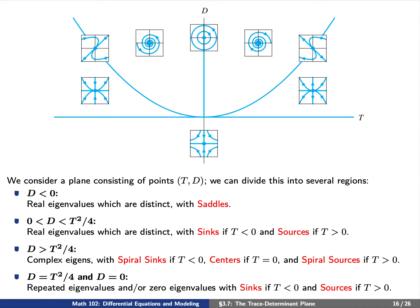Finally, we can consider the two curves. Either we are on the parabola — D = T²/4 — or we are on the T-axis — D = 0. In these cases we have repeated eigenvalues and/or zero eigenvalues. We have sinks if T is negative and sources if T is positive.